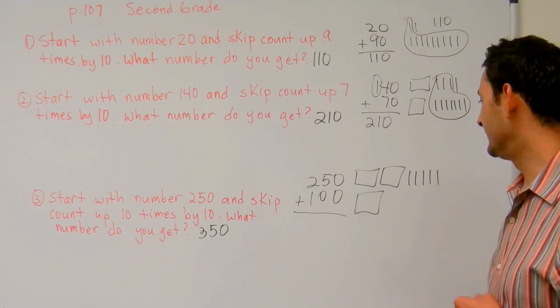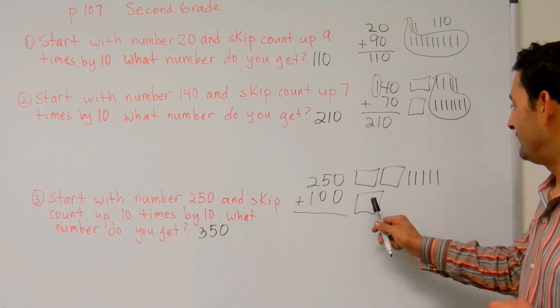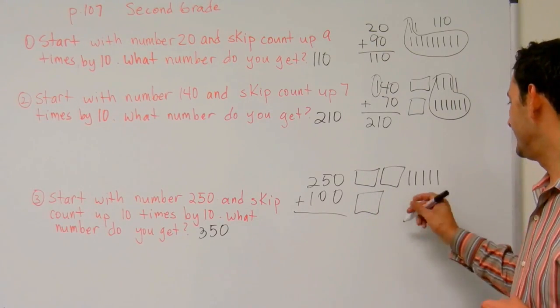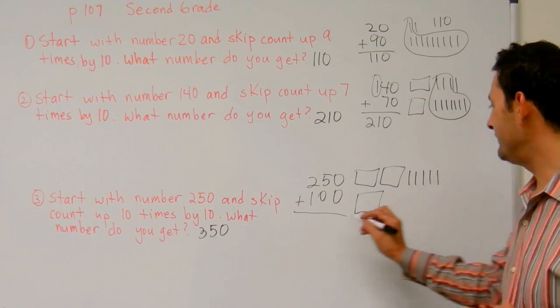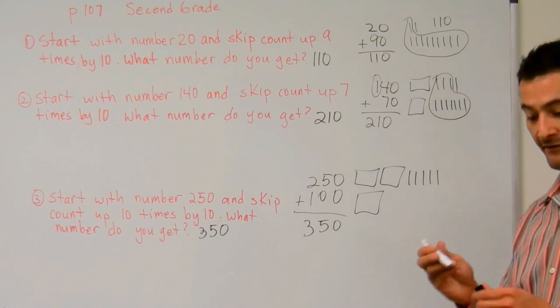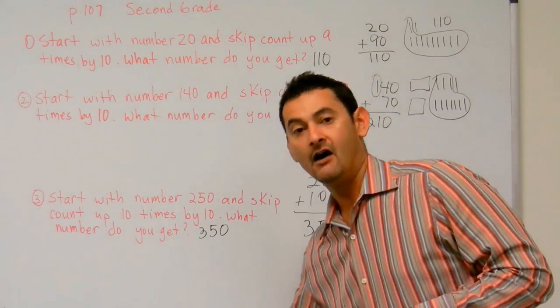And here we have one bundle of 100. So here we have one, two, three, 300. Ten, 20, 30, 40, 50. The answer is 350, boys and girls. Okay? Wonderful.